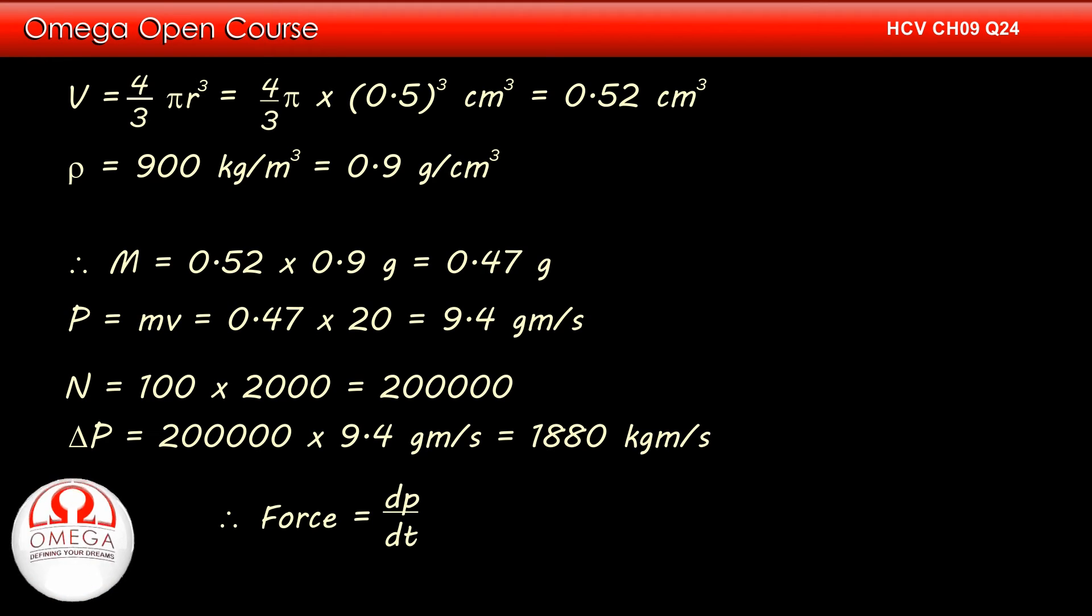Force is given by rate of change of momentum. Therefore, change in momentum of hailstones per second is the force exerted by hailstones on the roof. Thus, force exerted on roof by hailstones is 1880 N.